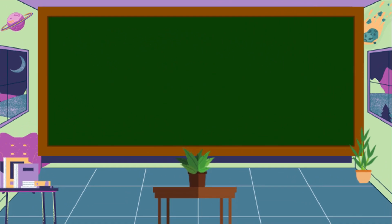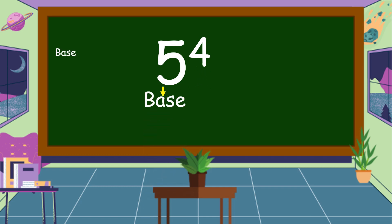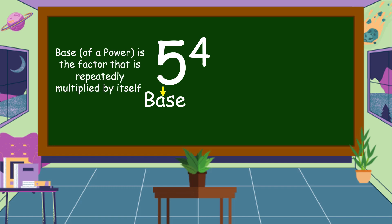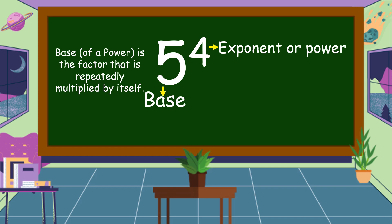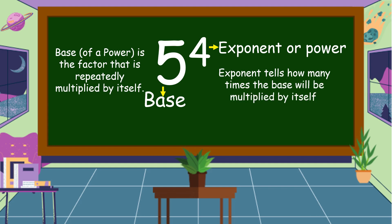Before we go further with our topic, let's review first about the base and exponent. So 5 here is the base. The base of a power is the factor that is repeatedly multiplied by itself. 4 is the exponent or power. The exponent tells how many times the base will be multiplied by itself.